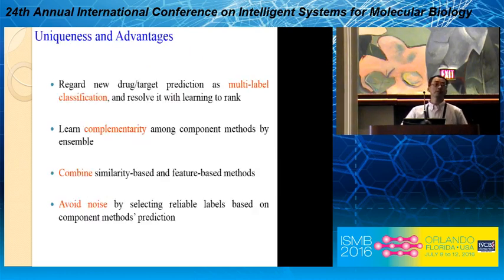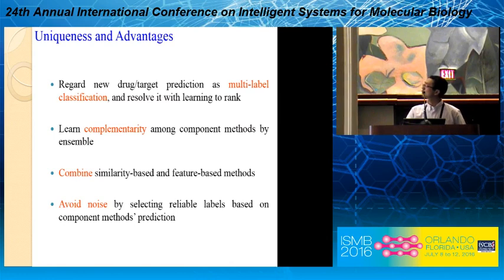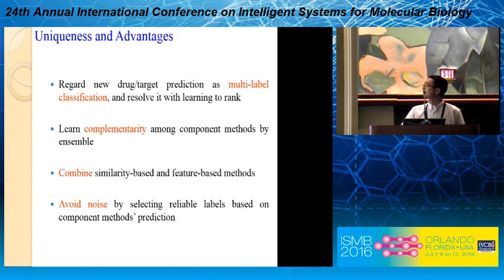The uniqueness of our method is that we treat the problem as a multi-label classification problem and use learning-to-rank to resolve it. We try to render comparability among component methods by ensemble, so our method is also called ensemble learning-to-rank. In this work, we combine similarity-based and feature-based methods. We also avoid noise by only selecting a small set of labels based on the component methods.